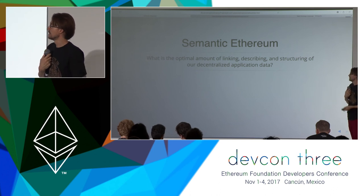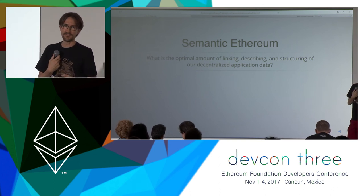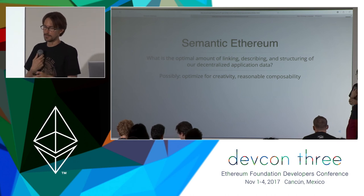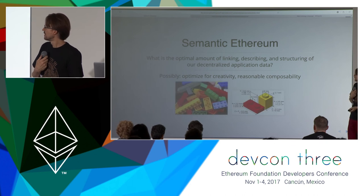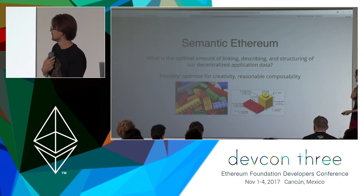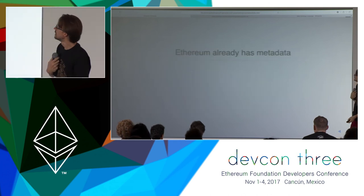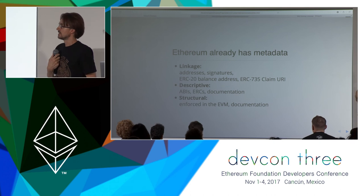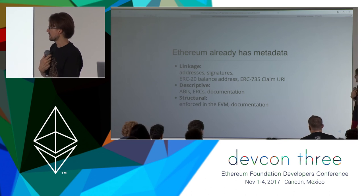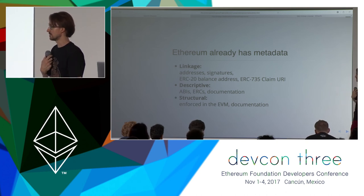When you think about semantic Ethereum — what's the appropriate level, how far do we want to go? I think it's important to foster creativity but not to overdo it. Just enough for composability — a good metaphor is: you create a standard for the Lego brick but you let people build whatever they want. You need some structure. Ethereum obviously has a lot of metadata involved: addresses, signatures, token balances, identity claims, URIs. On the descriptive side, you have ABIs and documentation, and structure enforced in the ABI.